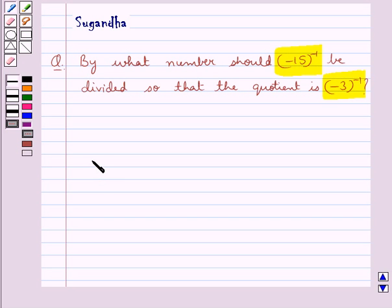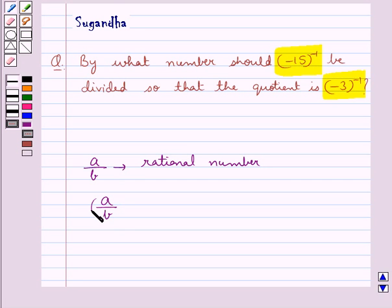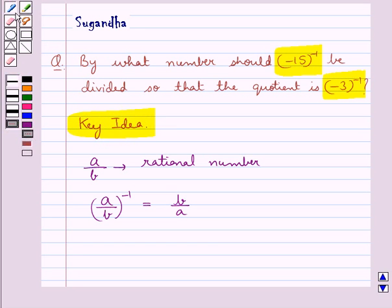Now if we are given a rational number, say a upon b, then a upon b to the power minus 1 is equal to b upon a. This is the key idea to be used in this question.